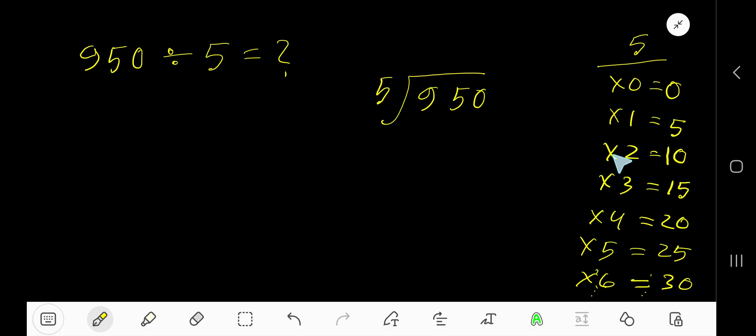5 goes into 5 times 2, 10 which is greater. So 1 time. 1 time 5, 5. Subtract 4. Bring down this 5.